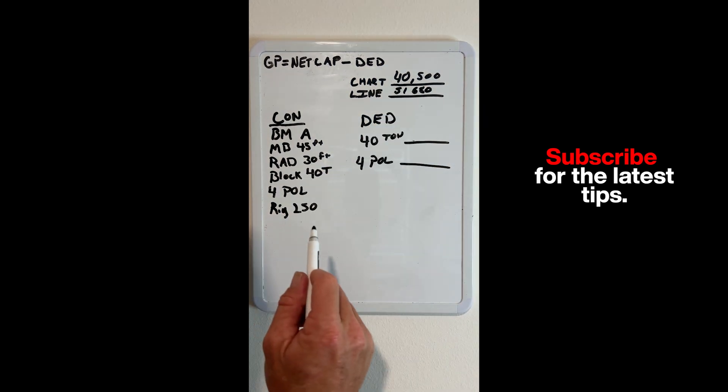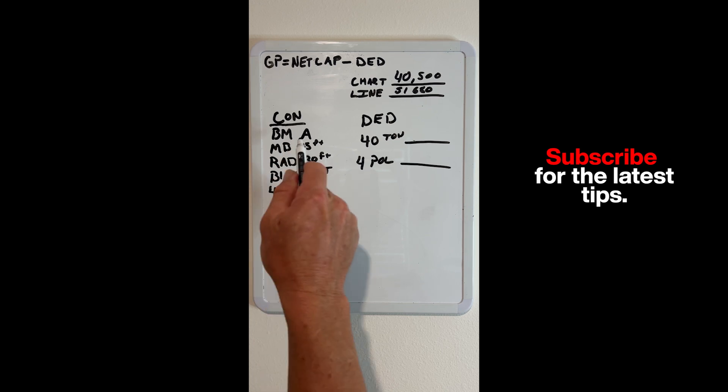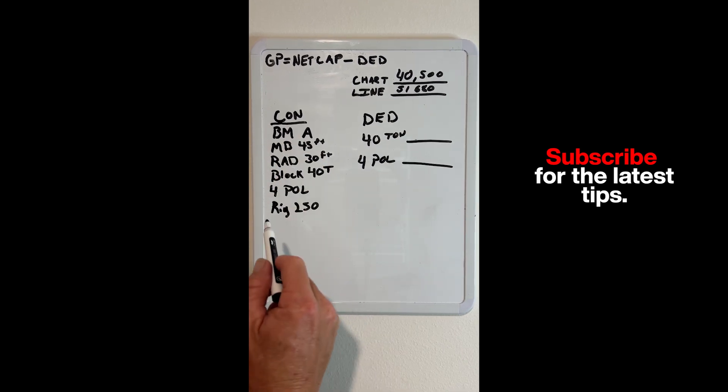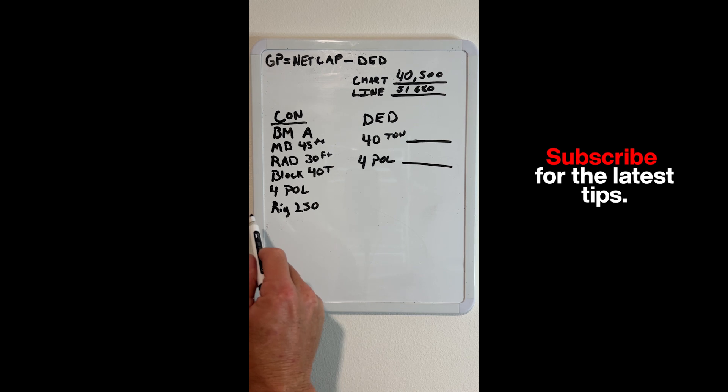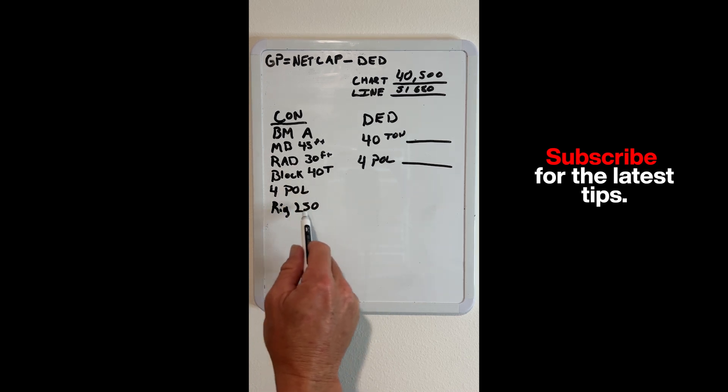We're going to go with 40,500. Over here is our configuration: we're in boom mode A, main boom 45 feet, radius 30 feet. Our block is 40 ton with four parts of line, and our rigging is 250.